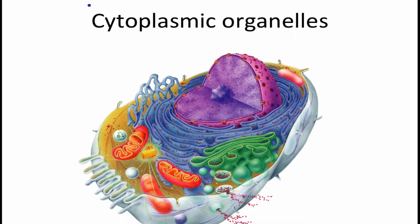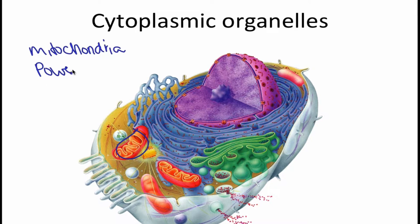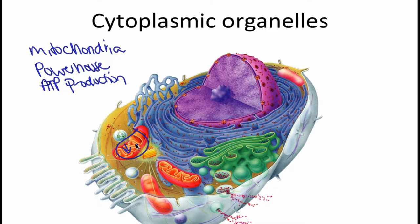So let's start out with the mitochondria. The mitochondria is known as the powerhouse of the cell, so it's going to be in charge of ATP production. ATP is going to be produced when food molecules are broken down and oxygen is utilized to produce ATP.